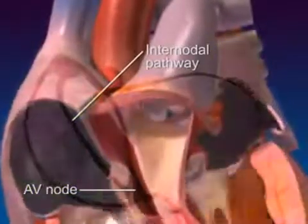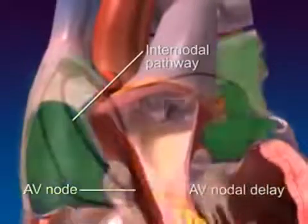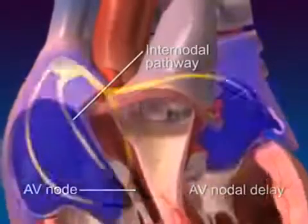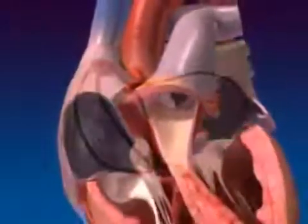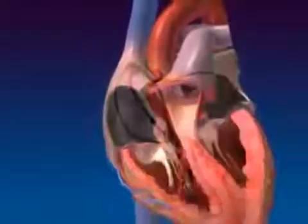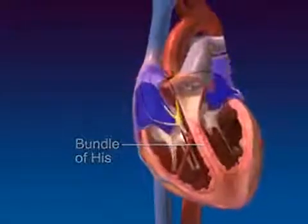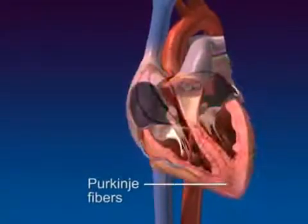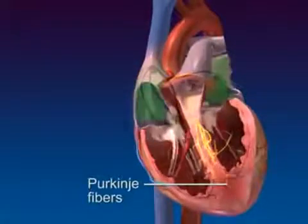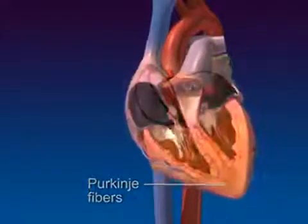The AV node is the only point of electrical contact between the atria and ventricles. Here, the impulse is briefly slowed, allowing the atria to contract and empty their contents into the ventricle before ventricular depolarization and contraction occur. The impulse then travels quickly through the bundle of His within the interventricular septum, branching into smaller Purkinje fibers that radiate throughout the ventricular myocardium. Action potentials travel quickly through the Purkinje fibers, then spread to the surrounding ventricular myocytes via gap junctions.